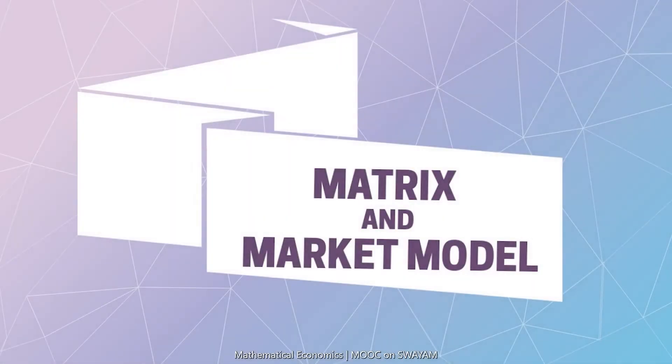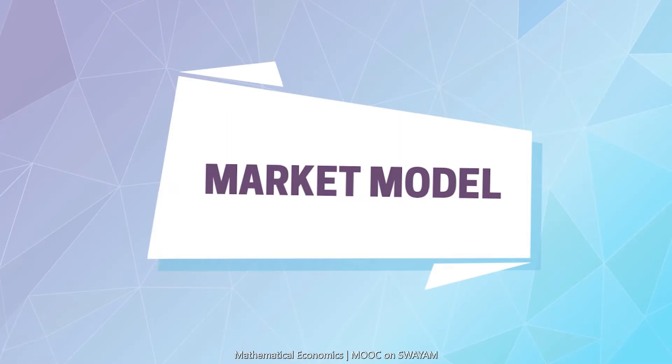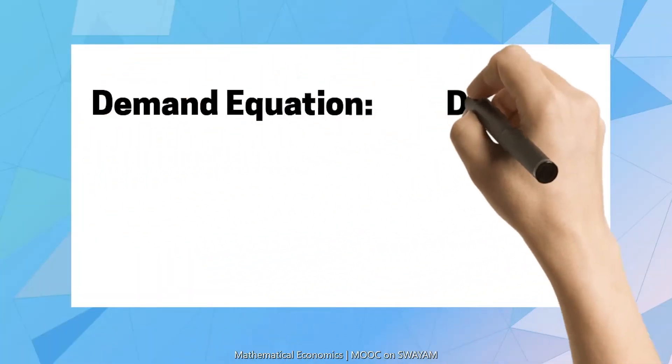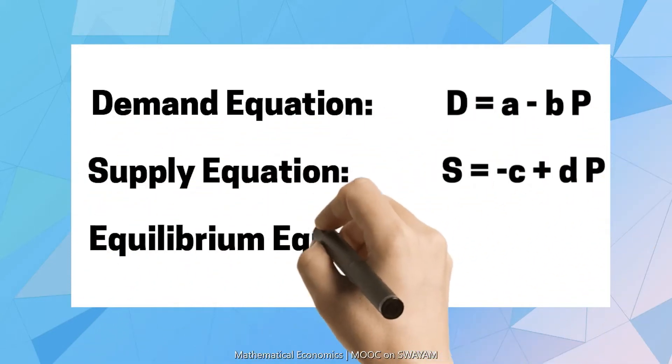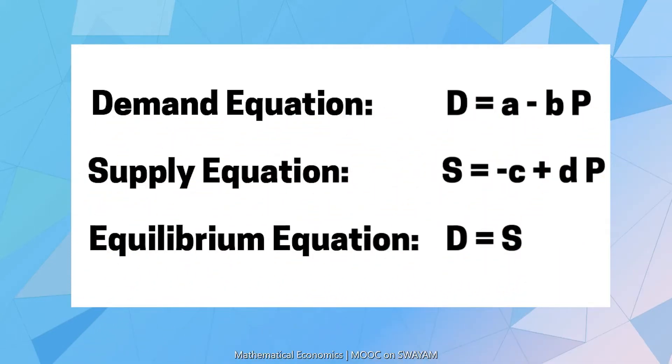The market model comprises of three equations: demand equation, supply equation, and equilibrium equation. In the model, D is the quantity demanded, S is the quantity supplied, and P is the price. A, B, C, and D are the parameters.